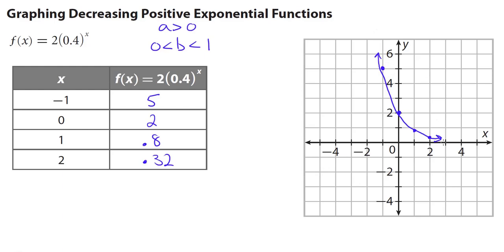Describing the behavior: on the right end, as x values increase forever, the curve gets closer and closer to the x-axis, so as x approaches positive infinity, y approaches 0. On the left end, as x decreases forever, the y values are actually increasing, so as x approaches negative infinity, y approaches positive infinity.